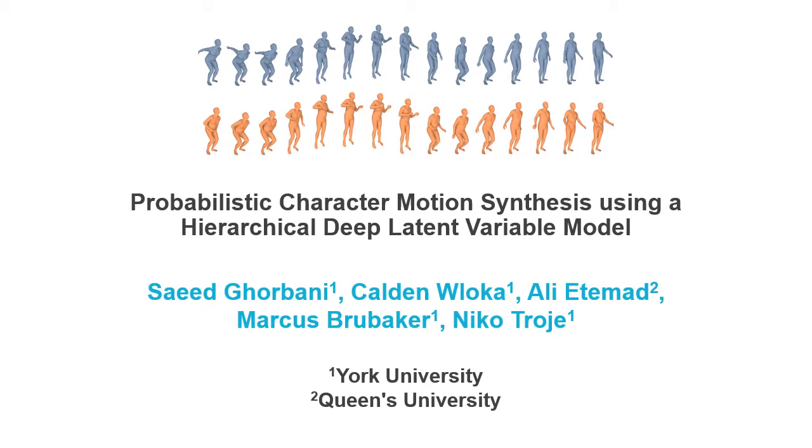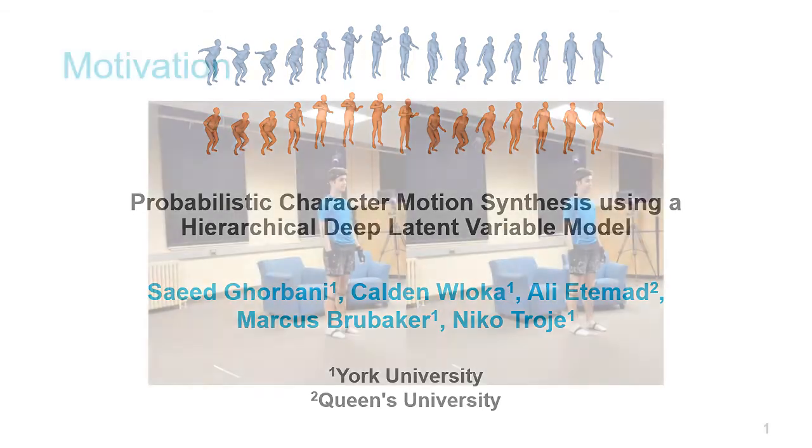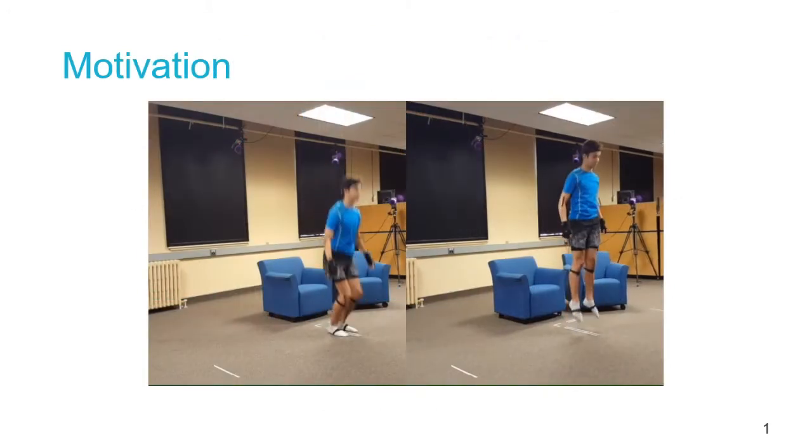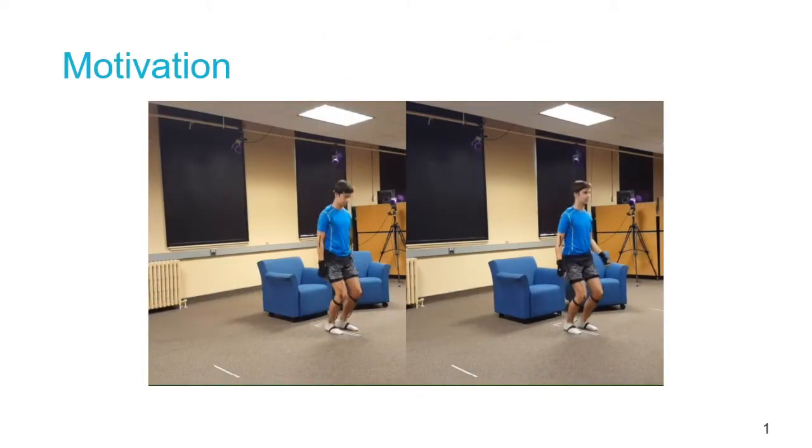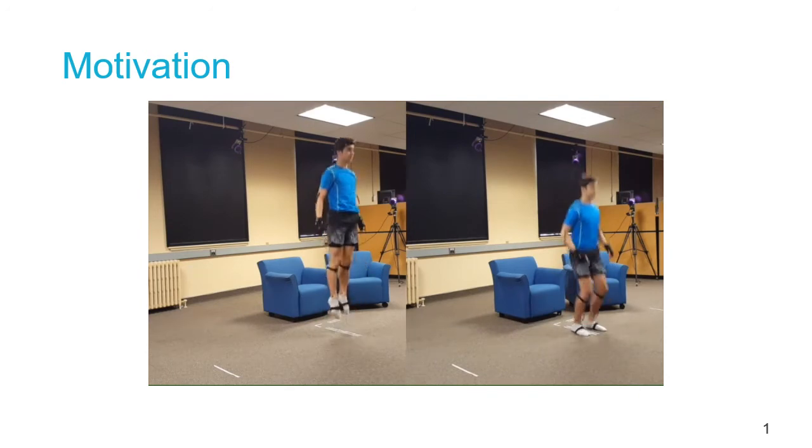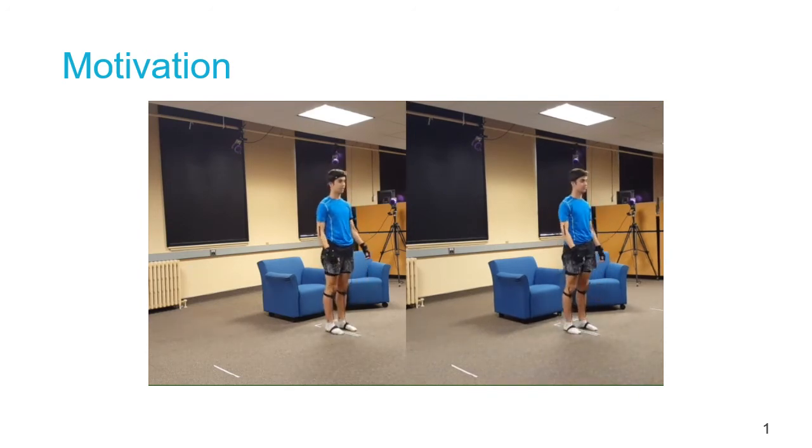In this paper, we present a probabilistic model for generating natural character motion. One of the primary motivations for our work is that when people execute actions, they're not identical every time, even when it's the same person.